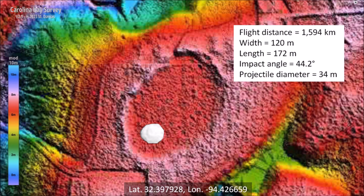This East Texas Carolina Bay is located 1,594 kilometers from Saginaw Bay, which is assumed to be the point from which the ice boulder that made the basin was launched. The basin has a width of 120 meters and a length of 172 meters. The width-to-length ratio corresponds to an impact angle of 44.2 degrees. The diameter of the glacier ice projectile that made the basin is estimated to be 34 meters, which is one-fifth of the basin length.